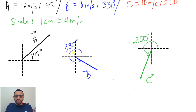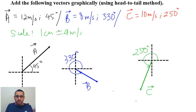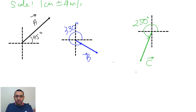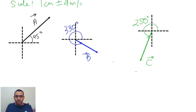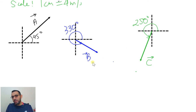Now I have to move these vectors and place them head to tail. I will keep A in its place, move B to the tip of A, then C to the tip of B to make them head to tail.